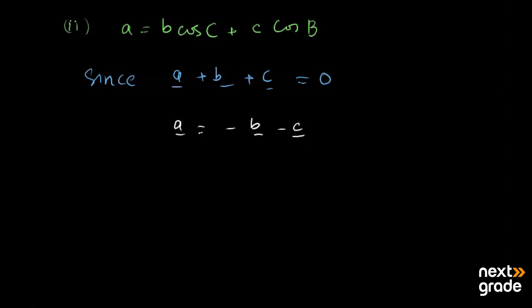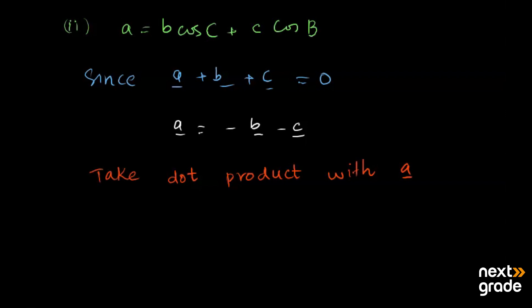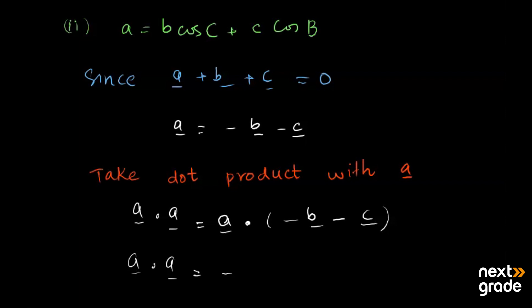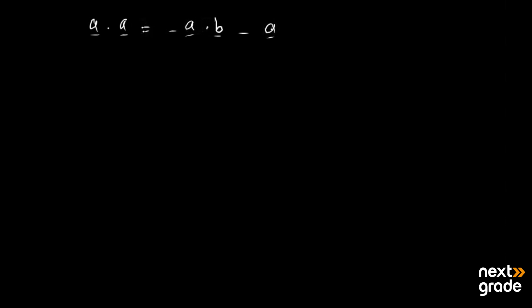b اور c کو right side پر لے لیا۔ اب ہم اس میں dot product لیں گے — take dot product with a on both sides. تو left side پر آئے گا a dot a، اور right side پر آئے گا a dot (minus b minus c)، یعنی minus a dot b اور minus a dot c آجے گا۔